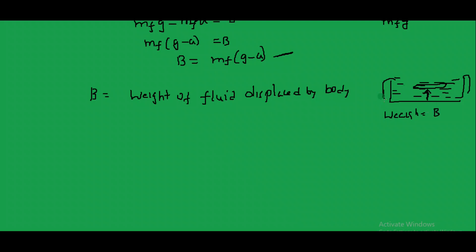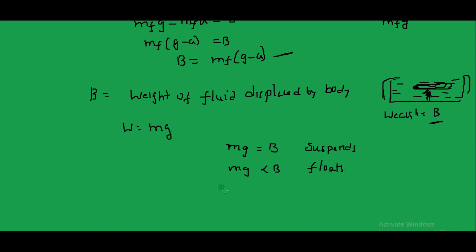At this point we can define three conditions. If weight Mg equals Buoyant Force B, the body is suspended (neutral buoyancy). If weight Mg is less than Buoyant Force B, the upward force exceeds downward force, so the body floats. If Mg is greater than B, the downward force exceeds the upward force, and the body sinks.